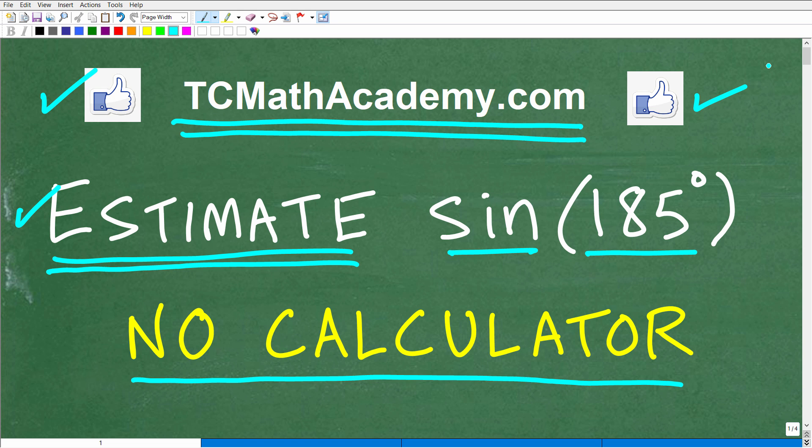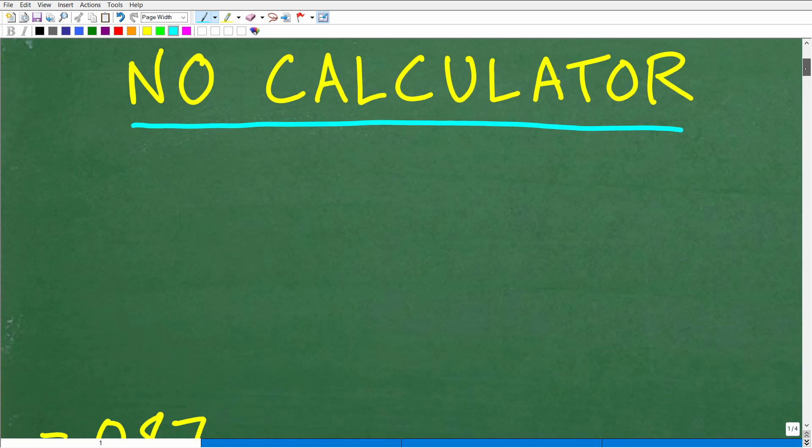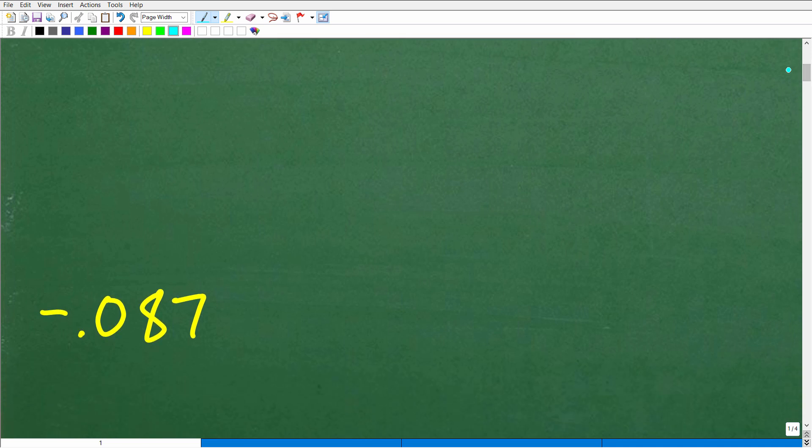Okay, so let's go ahead and take a look at the answer. We are talking about the sine of 185 degrees. Just want some basic reasonable number, but let me go ahead and show you the actual answer. Now, here, if you use your calculator, you're going to get negative 0.087.